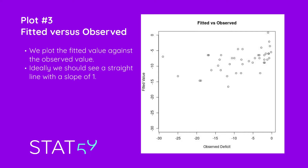Our third plot is the fitted values versus the observed values. Here we should see a straight line with a slope of one. What we see is not exactly a straight line, but the fitted and observed values are very close based on the values of the observed deficit.